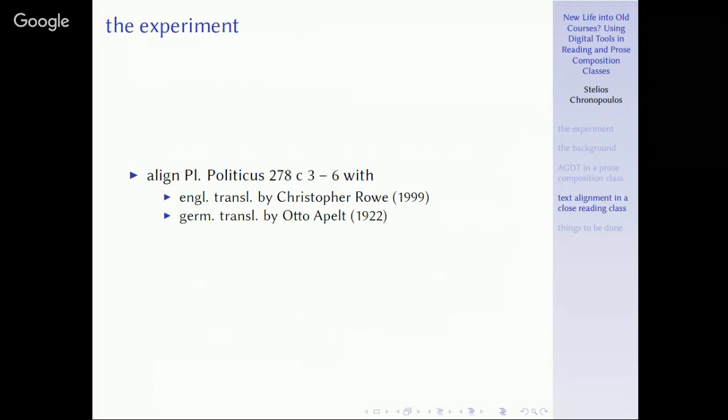Now, in the experiment that I will present you, we align Plato's Politicus. This is a passage where the guest from Elea, who is the main character, is speaking with the young Socrates, who is another person, not Socrates at all, it's another guy with the same name. Now, the guest from Elea gives, in this passage, a definition of what a model is. He calls it paradigma, and he gives a definition. Extremely compressed, extremely difficult, the Greek is horrible.